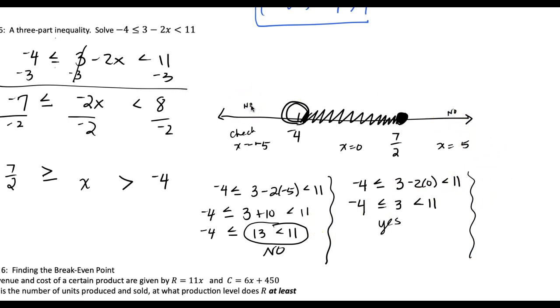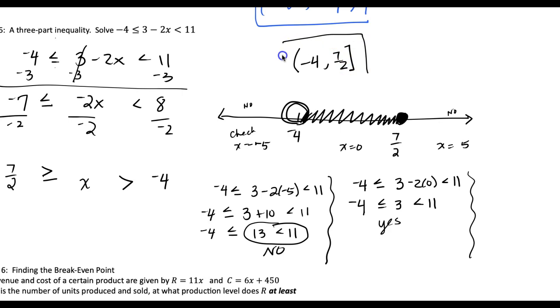Checking x equals 5 on the right would also not work, just like on the left. So our answer in interval notation would be negative 4 to 7 halves with the bracket on the 7 halves.